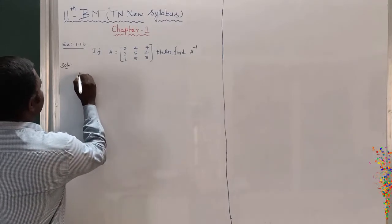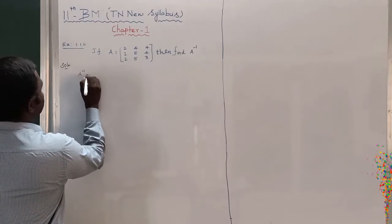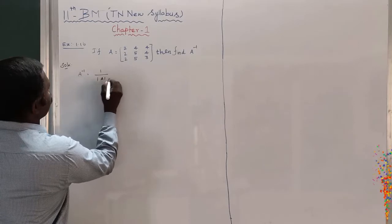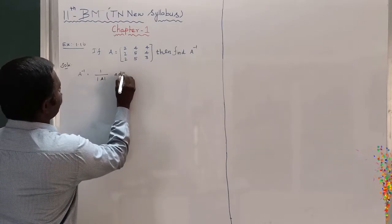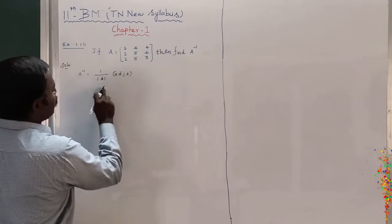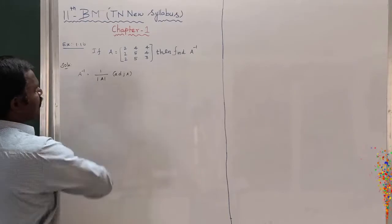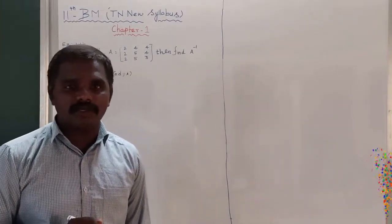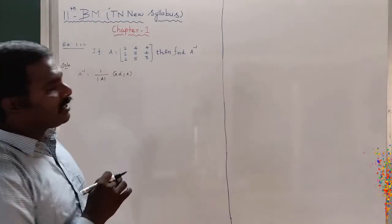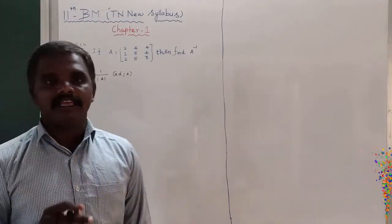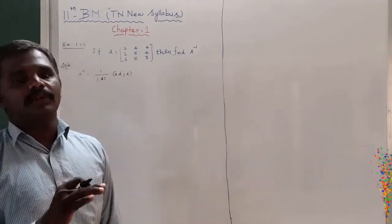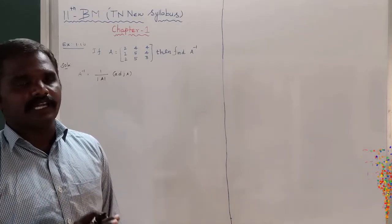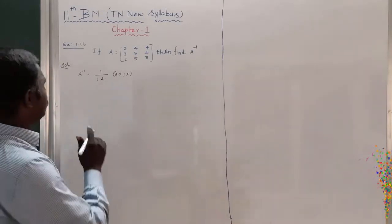Solution: We should know that A inverse is equal to 1 divided by modulus of A, into adjoint of A. So first we have to find out the modulus of A. If A is singular, then A inverse does not exist. If A is non-singular, then A inverse exists. So first you have to find out what is modulus of A.